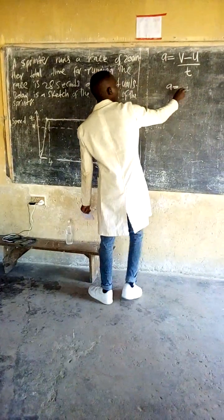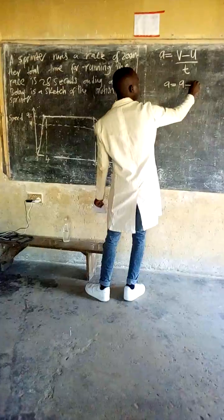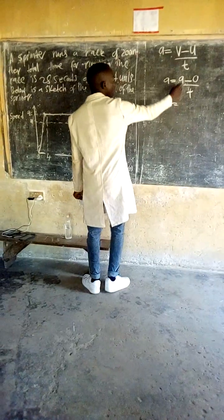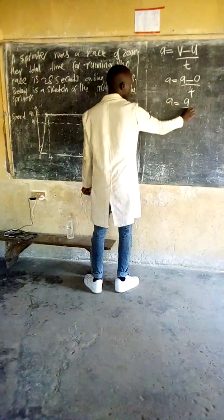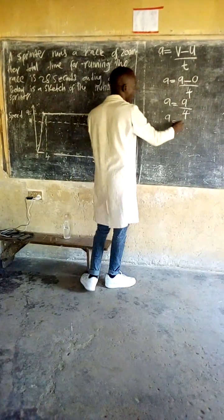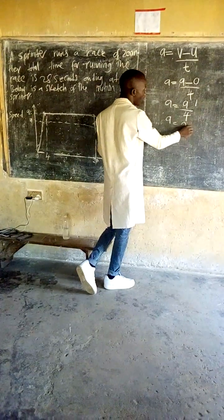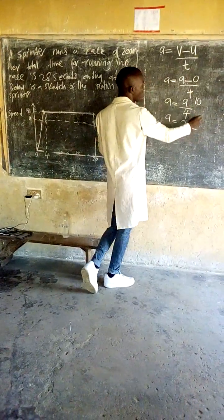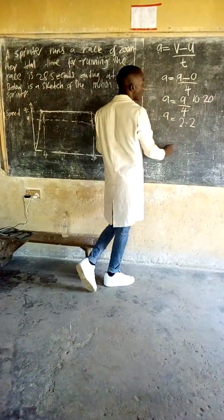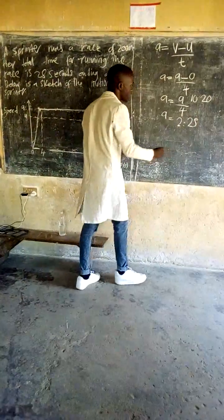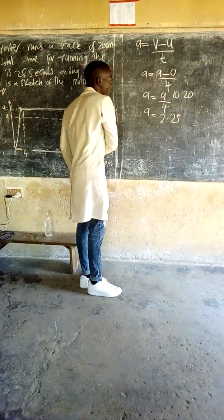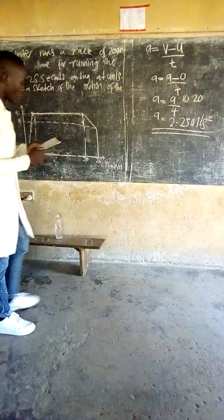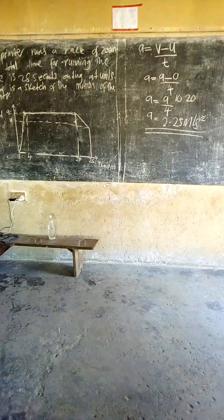So acceleration equals final velocity 9 minus initial velocity 0, over time 4. That gives us 9 over 4. Dividing 4 into 9: 2 remainder 1, add the point, 4 into 10 is 2 remainder 2, 4 into 20 is 5. So our acceleration in the first 4 seconds was 2.25 meters per second squared. In the exam, this first question was 1 mark.